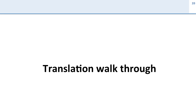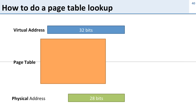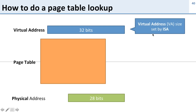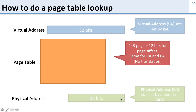Let's walk through how we actually do this translation and what bits go where. How do we do a page table lookup to translate from a virtual address to a physical address? Here's our page table, here's our virtual address, and our physical address. Our virtual address size is set by the ISA, and our physical address is set by the amount of RAM we have installed in the machine.